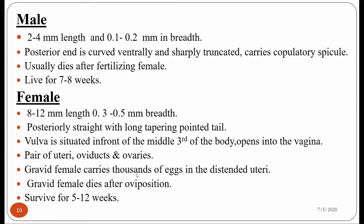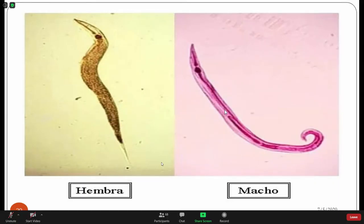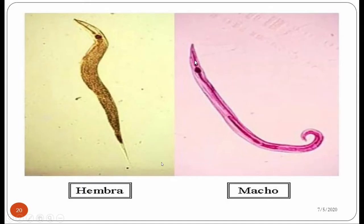The adult female worms can survive for about 12 weeks. Looking at the picture of the adult male worm of Enterobius vermicularis, this is the anterior portion and this is the posterior portion which is coiled ventrally. At the anterior region you can see the presence of oesophagus, and this oesophagus is extended to form a double bulb-like structure, which is the characteristic feature of adult worms of Enterobius vermicularis.